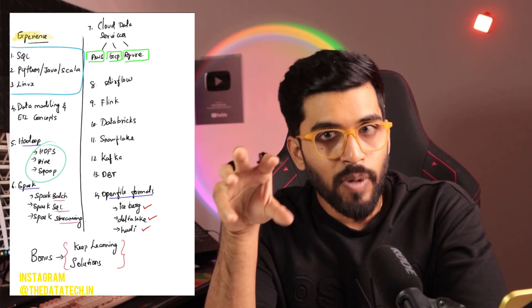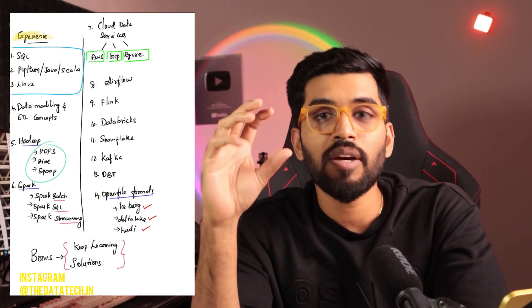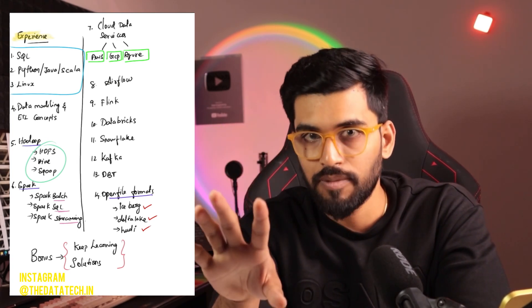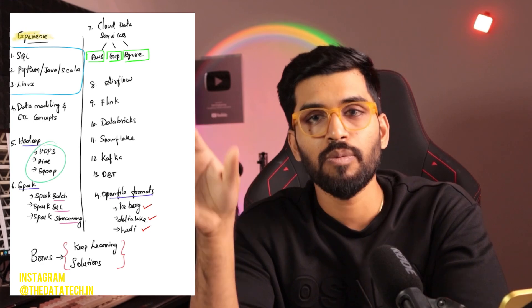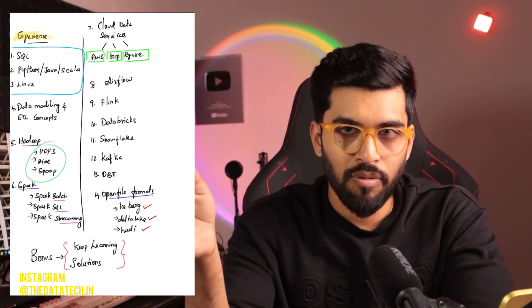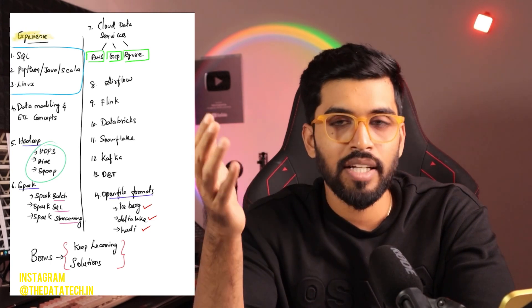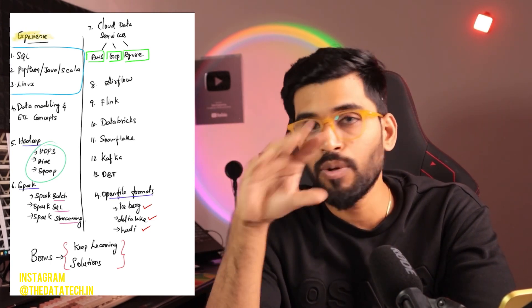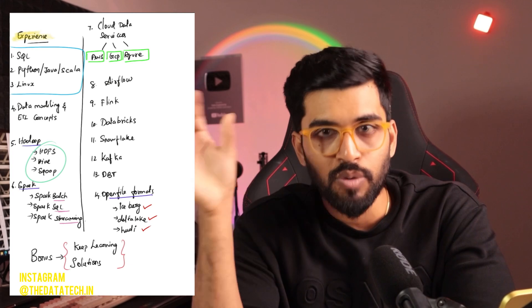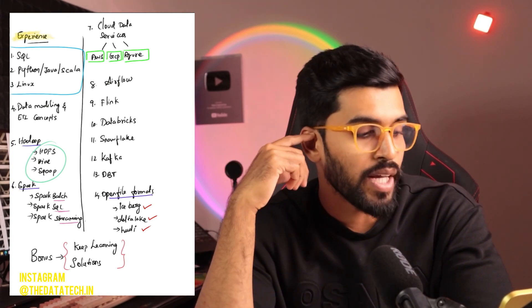Flink. In the second half of 2024, Flink became very famous. People who were using Spark started doing POCs on Flink. If you're not aware of Flink, go ahead and learn it. There are many videos and materials on YouTube, and you can also use Generative AI to help. Spend some good time on Flink.